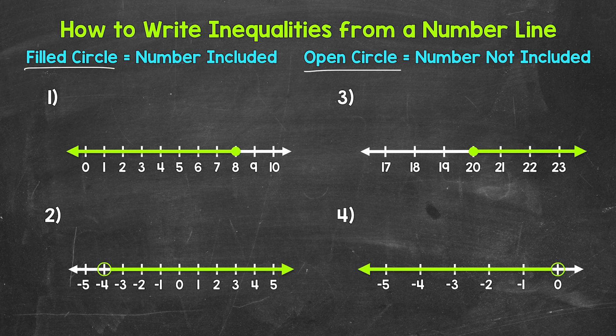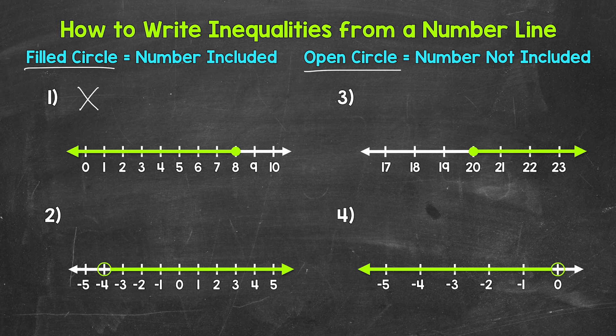For number 1, we have a filled circle at 8. A filled circle means that the number is included — it's a solution. An open circle means the number is not included — it's not a solution. So we have a filled circle at 8, and then an arrow pointing left towards all of the numbers less than 8. So that means 8 and all of the numbers less than 8 are solutions. We'll use x to represent all of our solutions — all of the numbers that will make this inequality true.